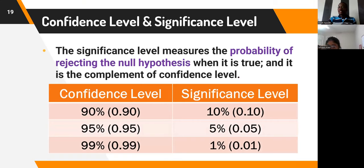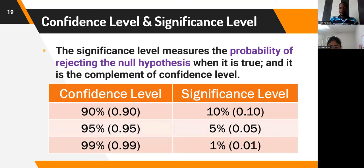To make a decision, we compare the p-value with any of these significance levels. If you are working with a 95% confidence level, you compare your p-value with a 5% significance level and decide whether to reject or fail to reject the null hypothesis. It is so significant to the extent that it measures the probability of rejecting the null hypothesis.